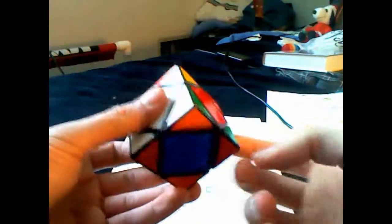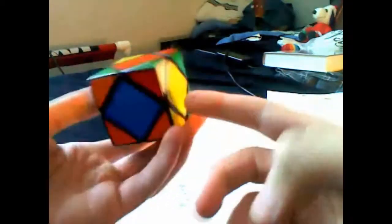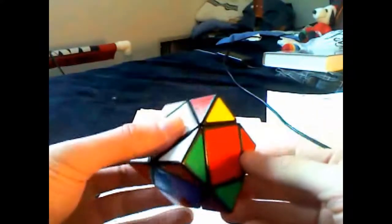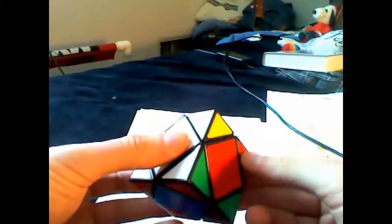The third case is that the white face of the bottom corner is facing the exact opposite side of the bottom center, like this. This is also a maximum of four moves.